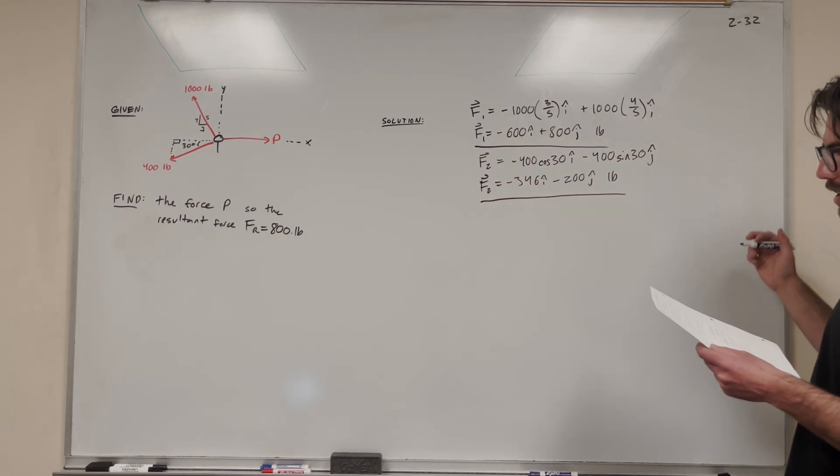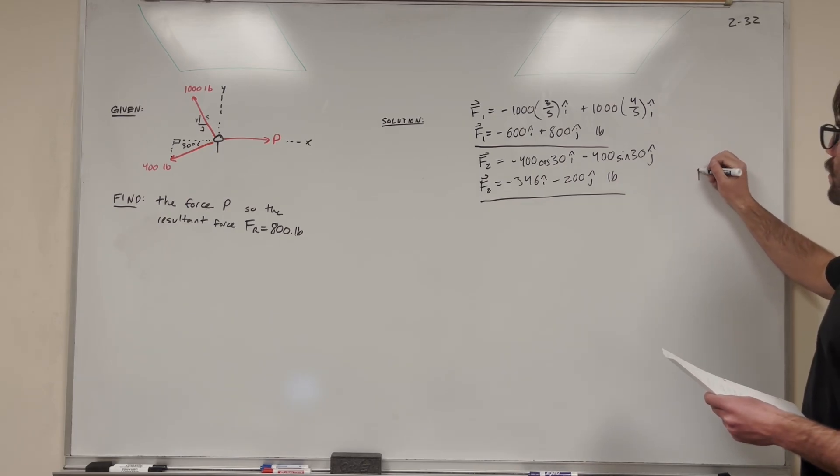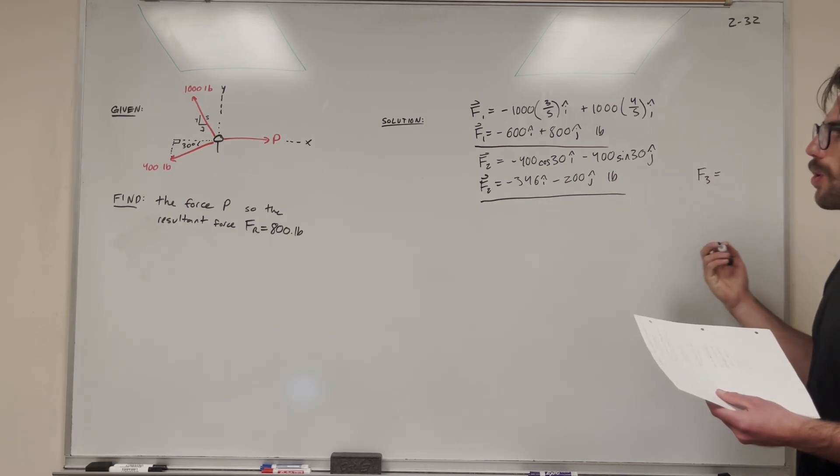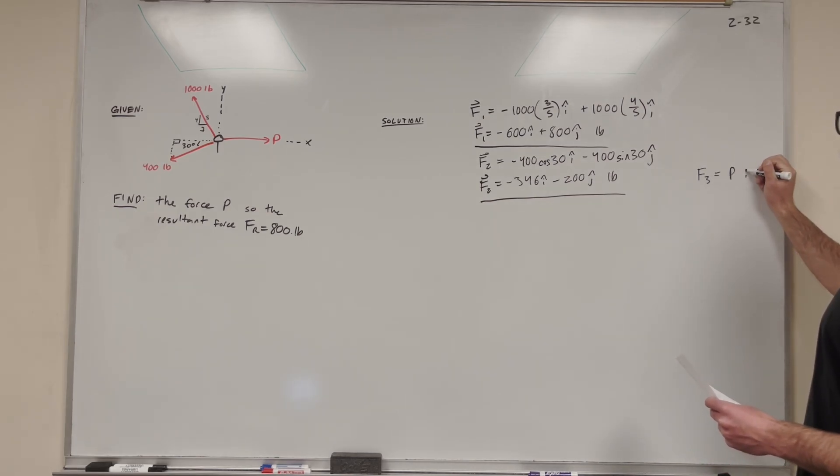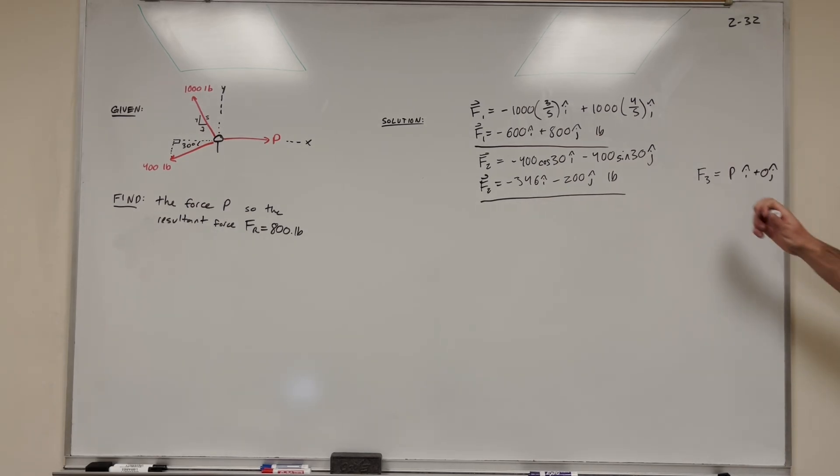Now, what is p? Force 3 is only acting in the x direction, so it's just going to have a positive pi component plus 0j. We don't know what that p is yet, because we're trying to solve for that. So these are three forces.